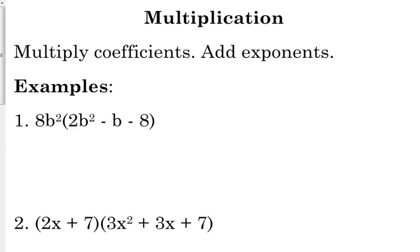So let's just start with a simple monomial single term being distributed to a trinomial. Okay, three terms. Y'all know how to distribute this, okay? You're going to multiply this by every term inside the parentheses.